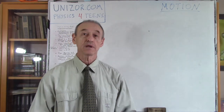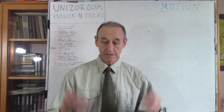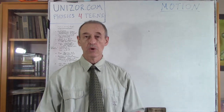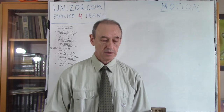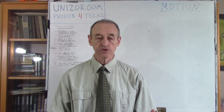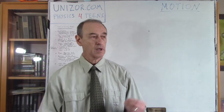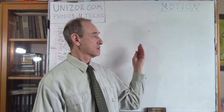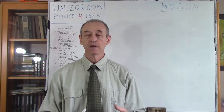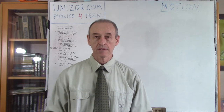Where does this point move? In three-dimensional space, obviously. So basically these two characteristics — the point and the three-dimensional space where it exists — define the object.